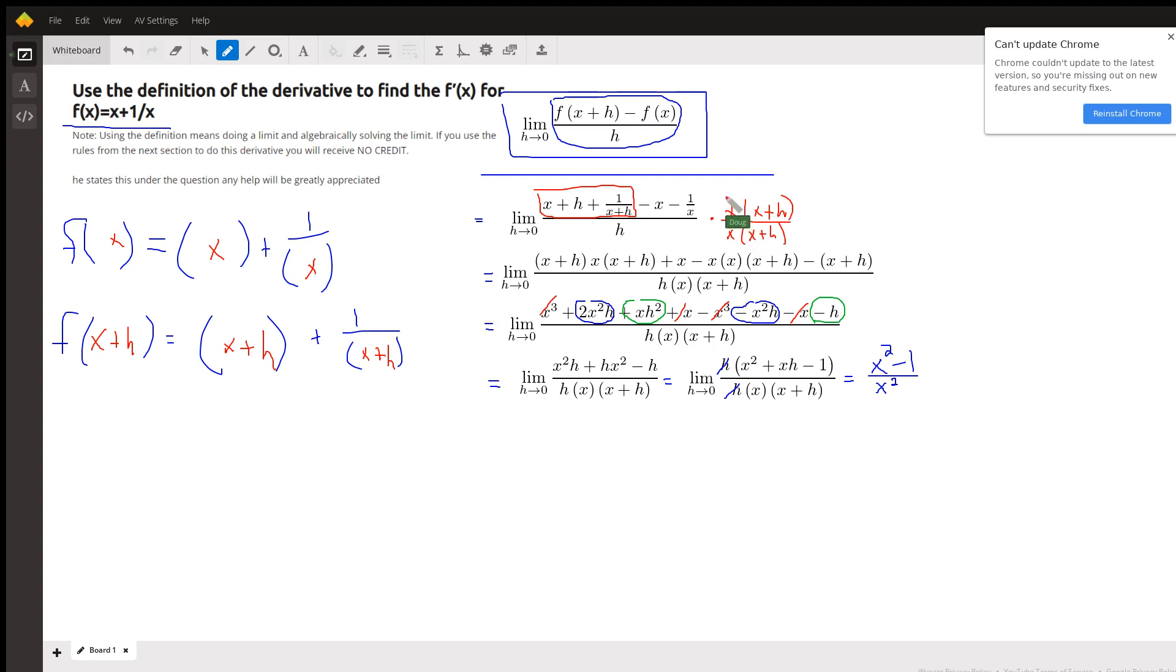And when I take this expression here times this, I get x plus h times that LCD, x times x plus h. When I take this LCD times this fraction, the x plus h's cancel out and I just have a factor of x remaining.